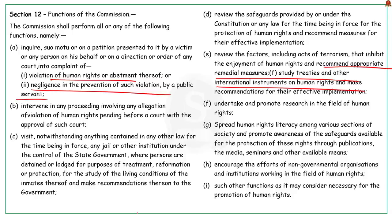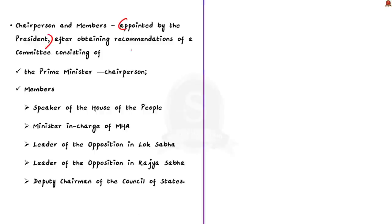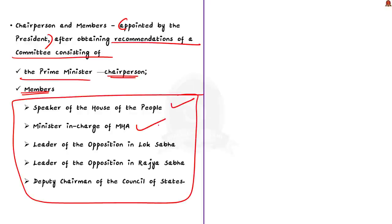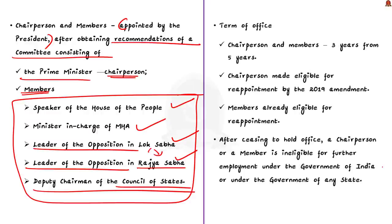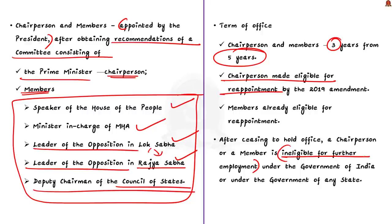The chairperson and members are appointed by the President, but only after obtaining recommendations from a particular committee. This committee consists of the Prime Minister as chairperson, and members such as the Speaker of Lok Sabha, Minister of Home Affairs, Leader of Opposition in Lok Sabha, Leader of Opposition in Rajya Sabha, and Deputy Chairman of Rajya Sabha. Further, the amendment also reduced the term of office of chairperson and members to three years. Previously, that is before the amendment, the term was five years. Also, the amendment has made the chairperson eligible for reappointment. But remember that after ceasing to hold office as chairperson or member of NHRC, they are ineligible for further employment under the government of India or under the government of any state.